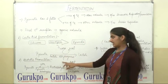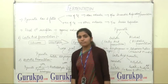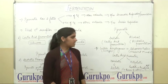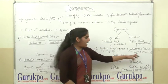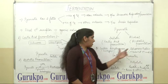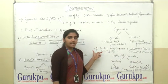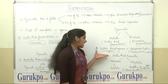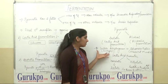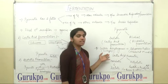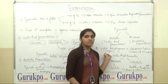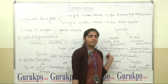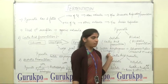Lactate dehydrogenase is a tetrameric protein which has two subunits: M and H. This lactate dehydrogenase is also known as an isoenzyme. Isoenzyme means they have the same metabolic activity but different subunits.